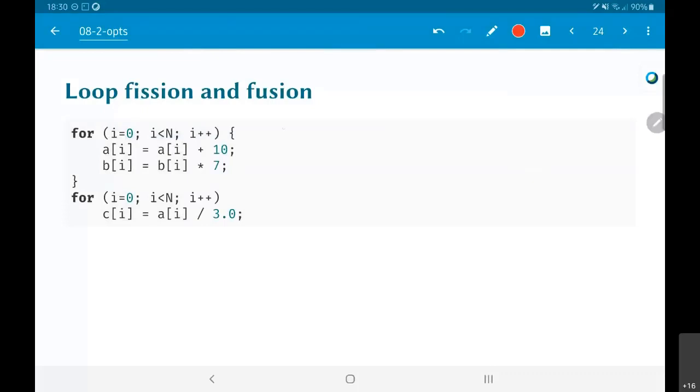What if I instead rewrote it as for loop and inside this I did a[i] = a[i] + 10, and have a separate for loop that basically says b[i] = b[i] * 7. So, in other words, this thing basically I do fission - I have broken one loop into two parts. Why? In this way each of the individual loops can run faster because it is more cache friendly.